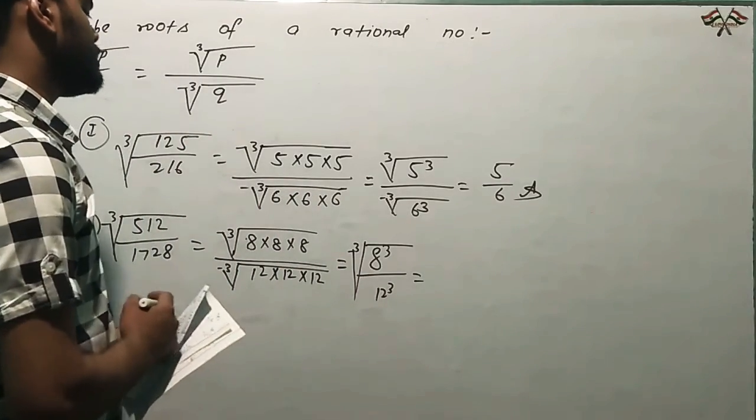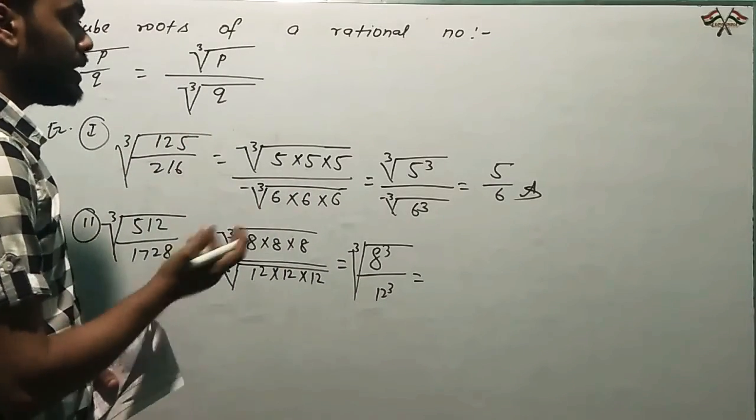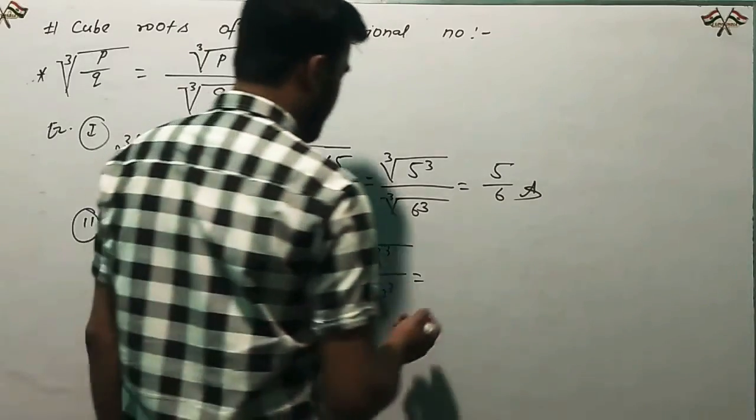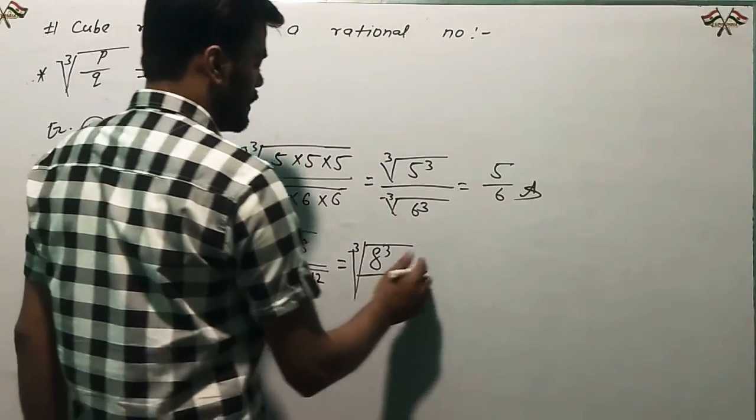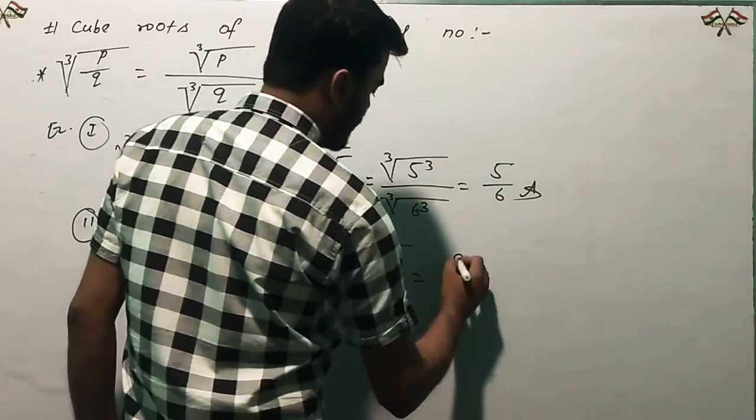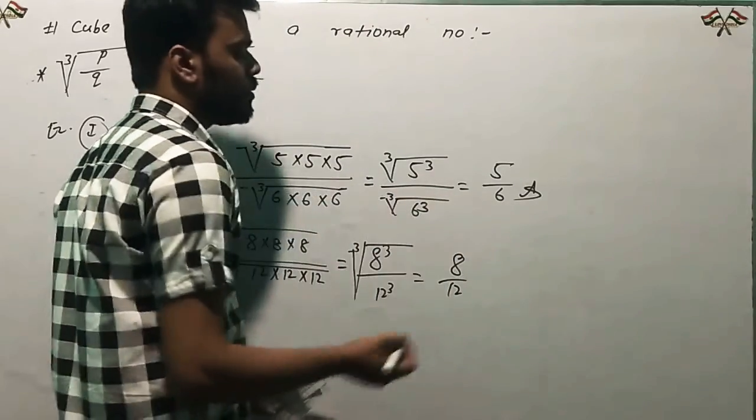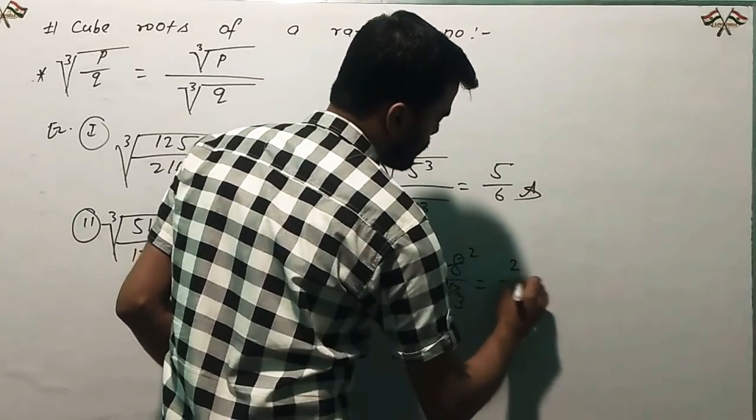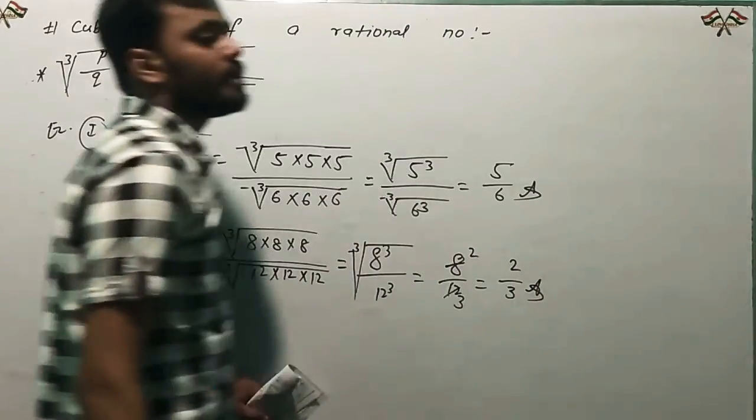If you solve it, you'll finally find out that equals 8 by 12. And 8 by 12 can be simplified, which means 2 by 3.